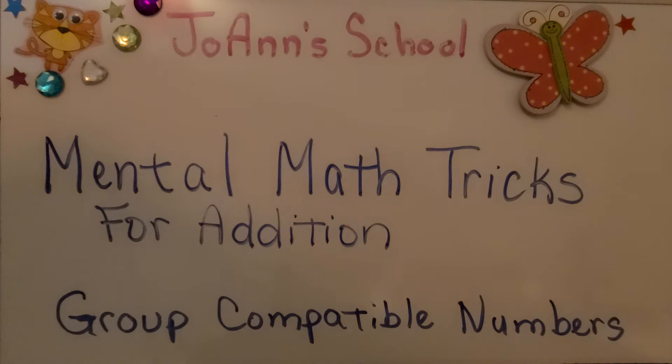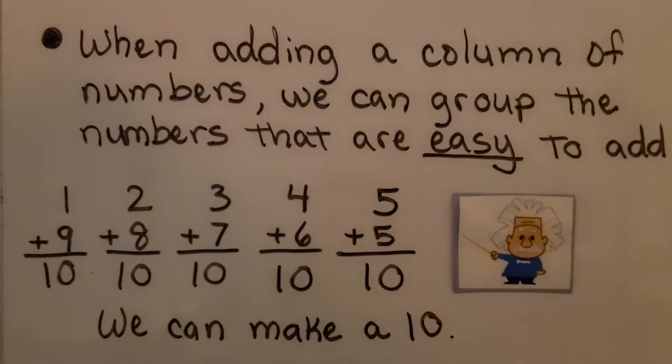Mental Math Tricks for Addition: Group Compatible Numbers. When adding a column of numbers, we can group the numbers that are easy to add. We can make a 10.